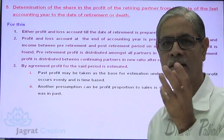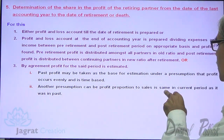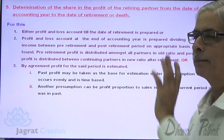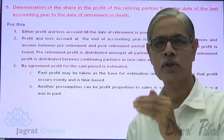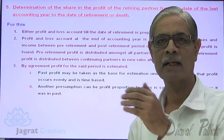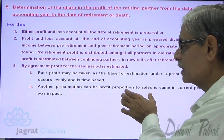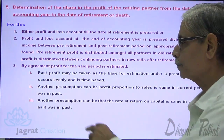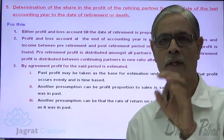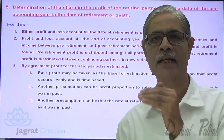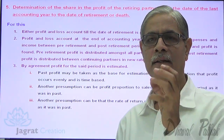Another presumption that can be taken is that the profit proportion to sales is the same in the current period as it was in the past. So the second presumption: profit proportion to sales is uniform in the current year as it was in the previous period. A third presumption can be that the rate of return on capital is the same in the current period as it was in the past — rate of return on capital is identical in the current period as it was in the past. These are the three presumptions on the basis of which the profit estimate is made.